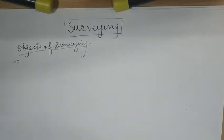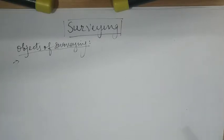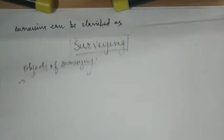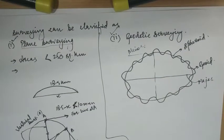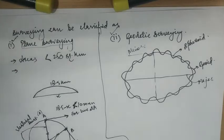Now we will start with primary divisions of surveying. There are basically two primary divisions of surveying: one is plane surveying and another is geodetic surveying. Plane surveying is a type of surveying in which the curvature of the earth is neglected and it is assumed to be a flat surface. All distances and horizontal angles are assumed to be projected onto a horizontal plane.